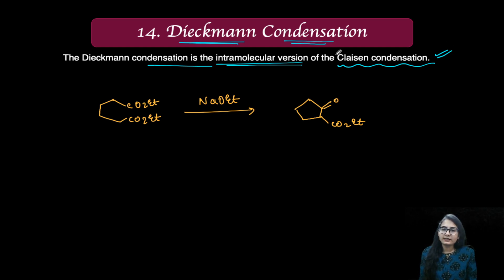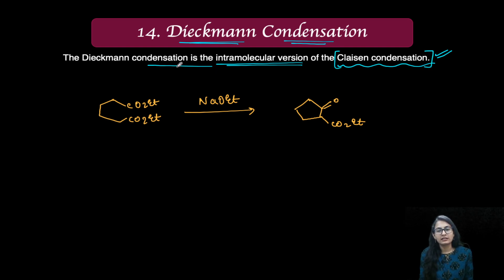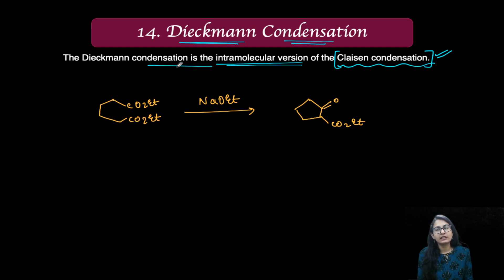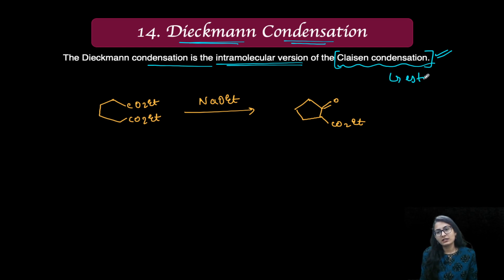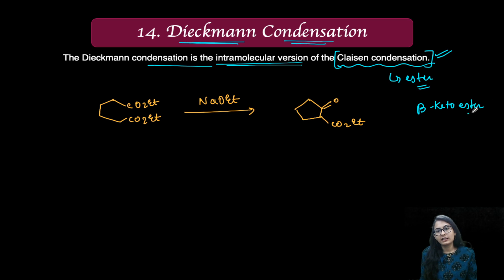If you understand what Claisen condensation is — it is the condensation between the esters, just like we have the aldol condensation which is the condensation between the aldehydes or ketones. Claisen condensation takes place between the esters to give you a beta-keto ester. The end product is a beta-keto ester in the Claisen condensation.